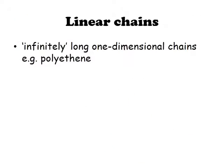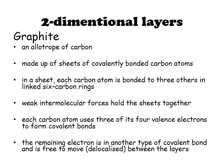In terms of linear chains, you have infinitely long one-dimensional chains — an example being the plastic polyethane. In terms of two-dimensional layers, a question in the exam could involve comparing and contrasting diamond to graphite. Graphite is an example of a two-dimensional layered network covalent solid and is an allotrope of carbon.